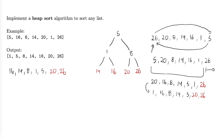Now we have to sift down 5: 5 can replace 8 and 8 can replace 5, so we'll swap those two. Our next element is 8 and we're going to switch that with the last element, which is 5. We can consider sifting down 5, but the only child for 5 is 1 and 5 is greater than 1 so we don't have to sift it down. One of our last steps is swapping 5 with 1. After that, 1 has nothing to swap with so it stays as is, and finally we get our sorted list: 1, 5, 8, 14, 16, 20, all the way to 26.